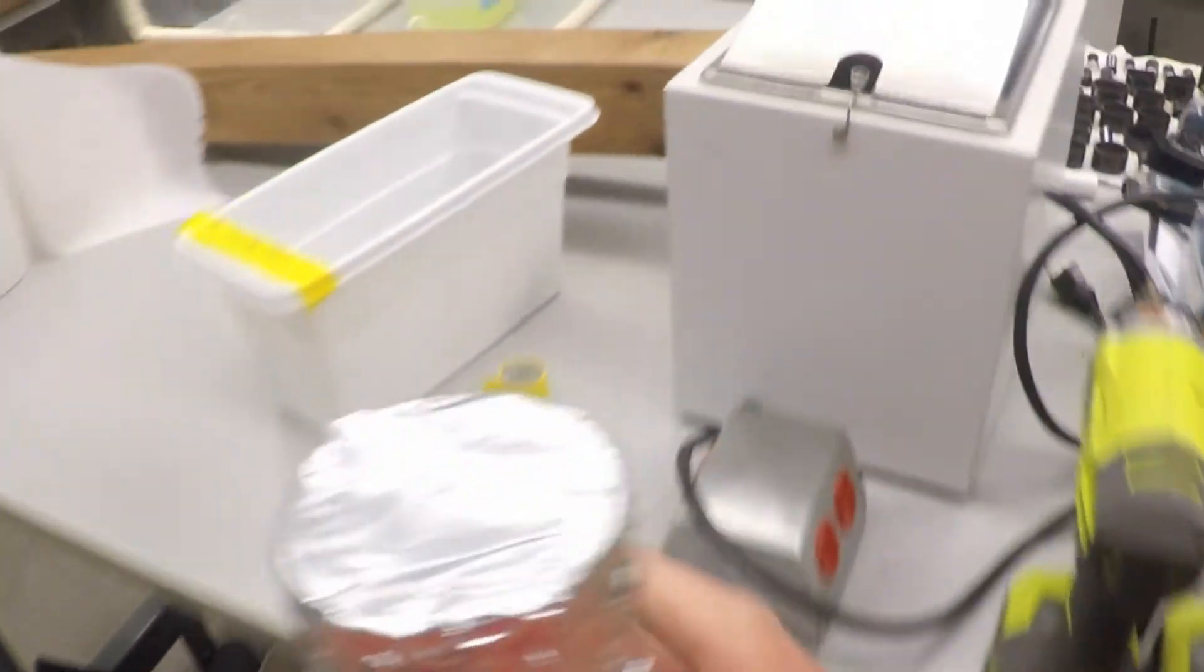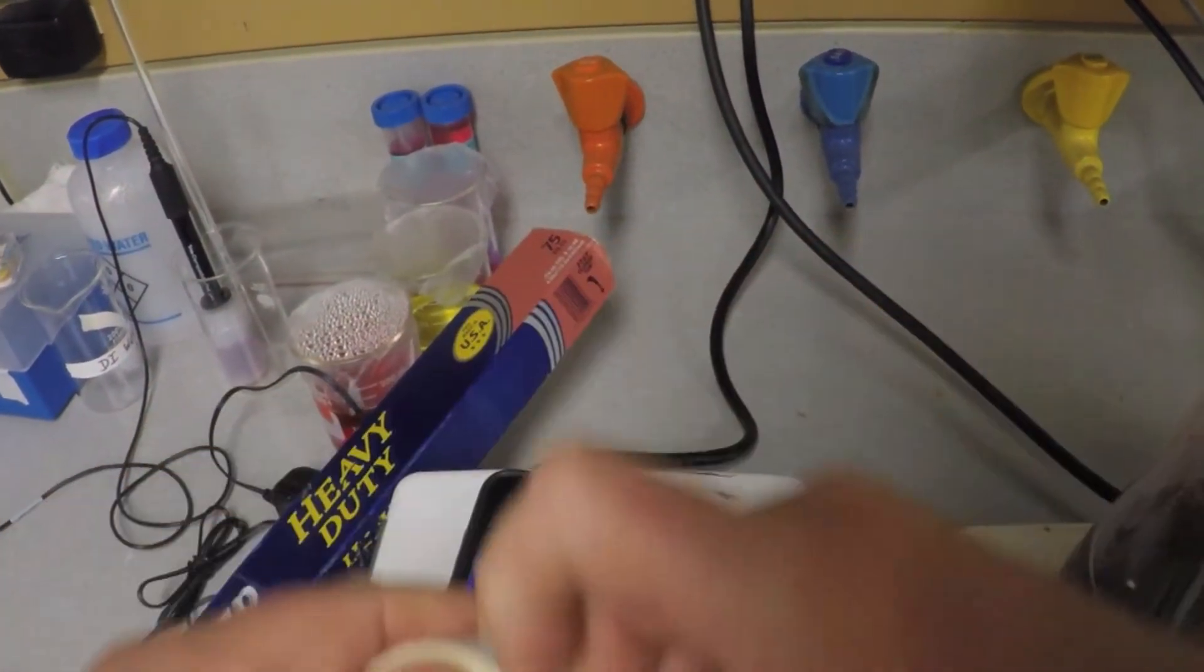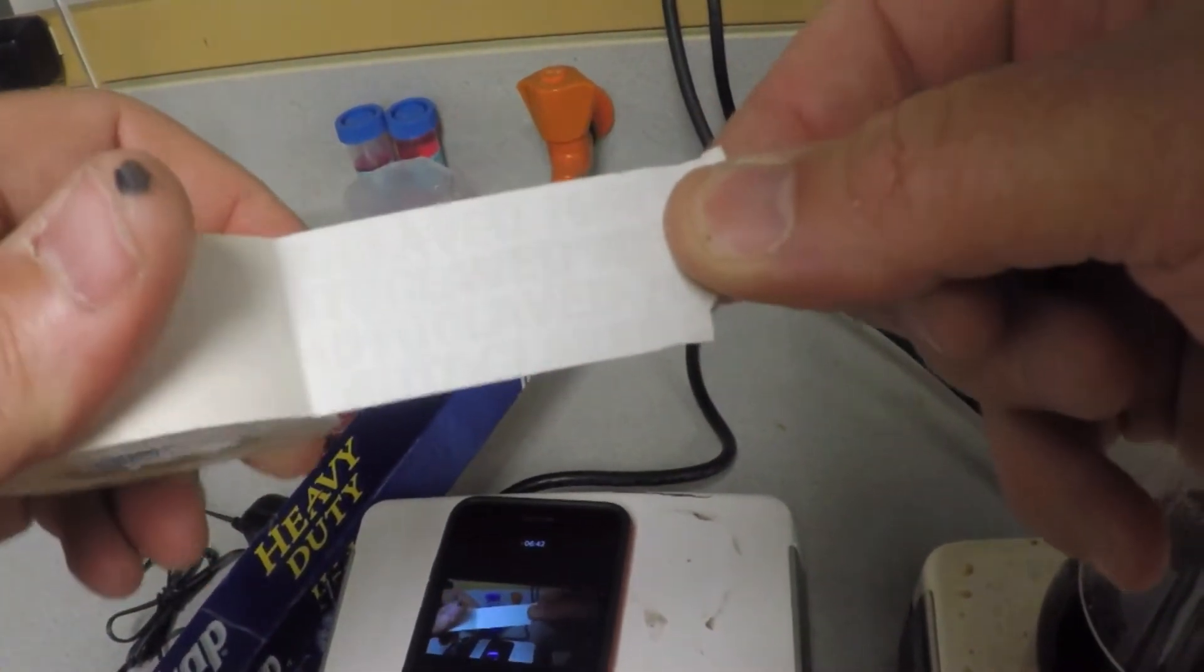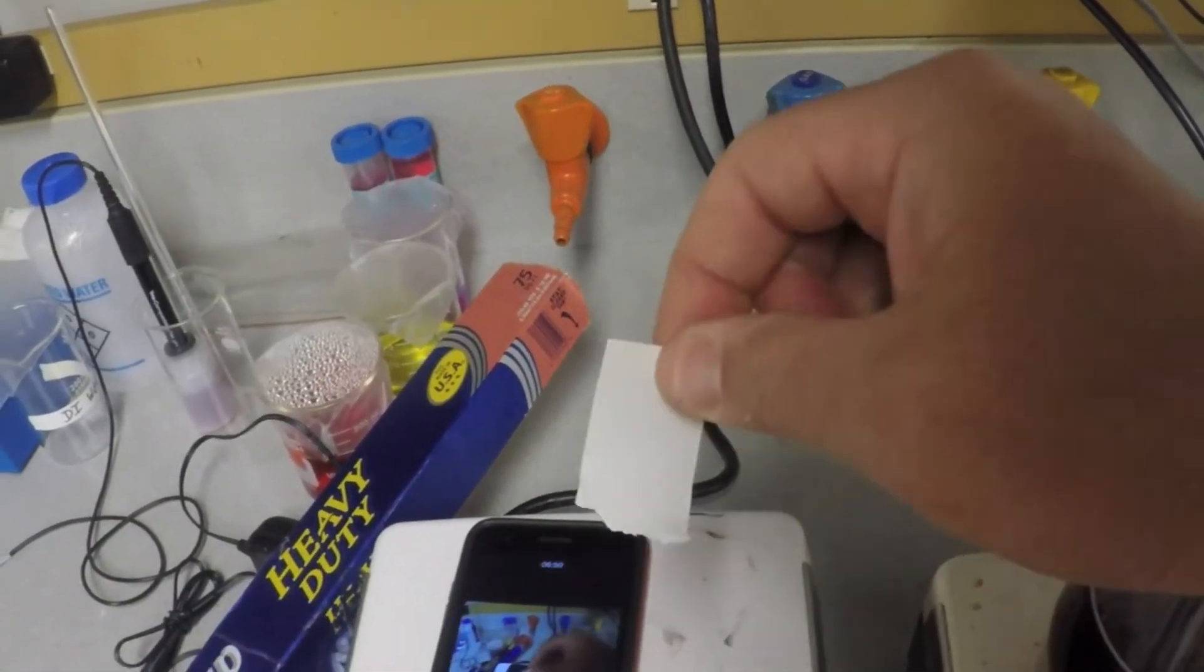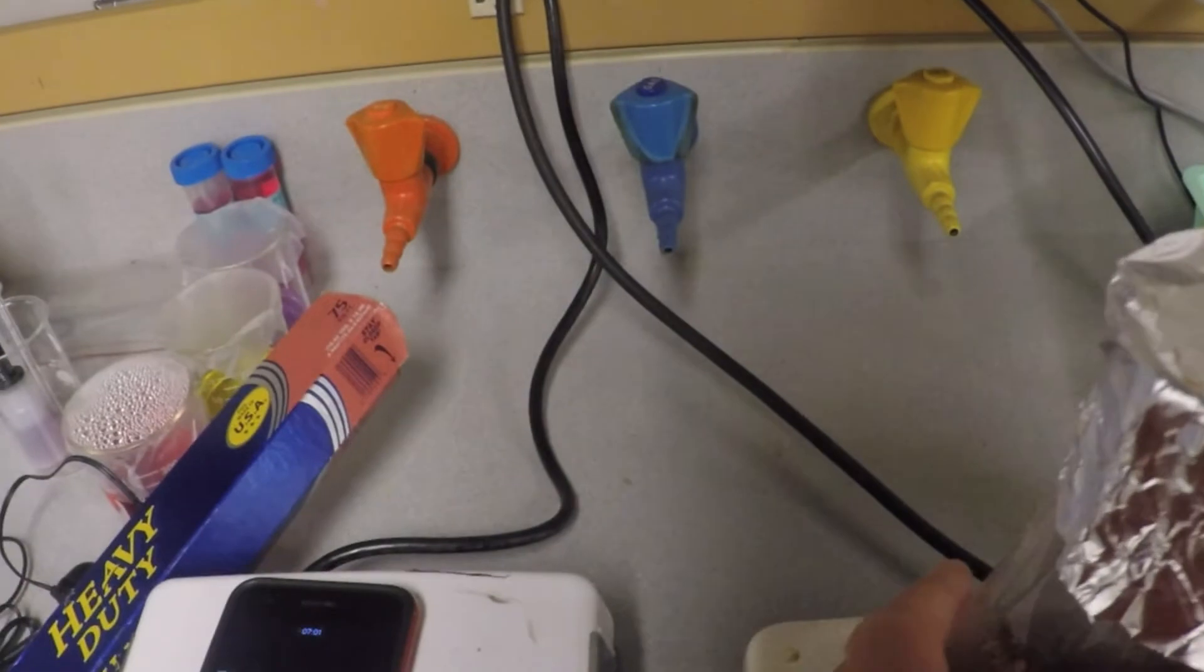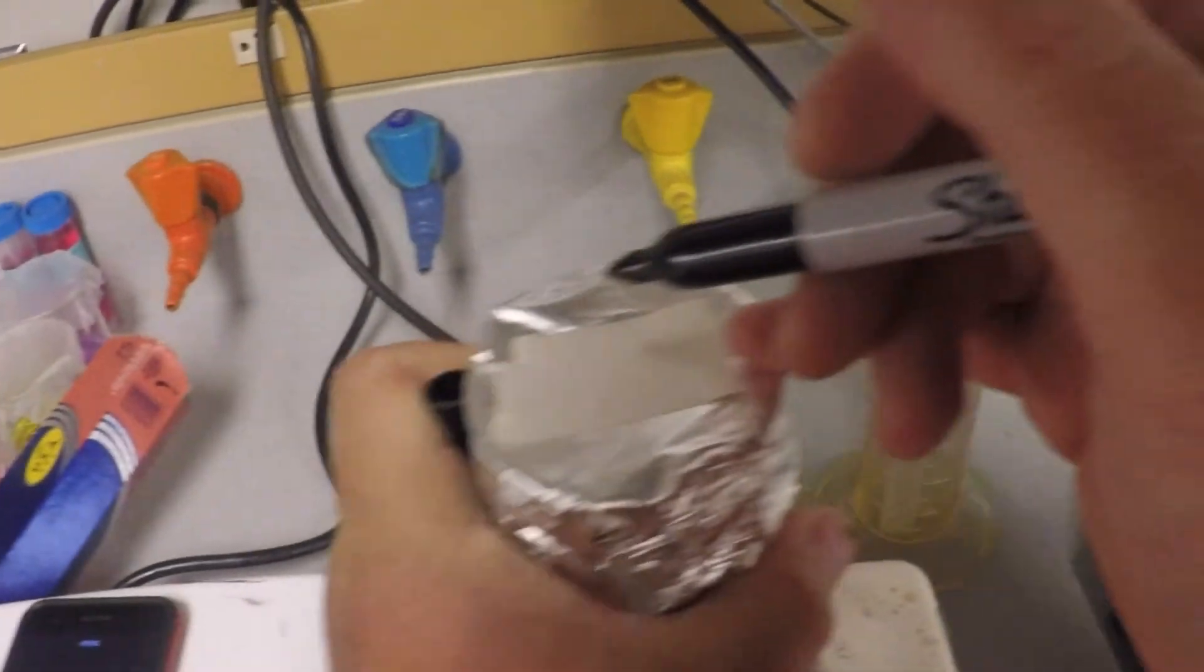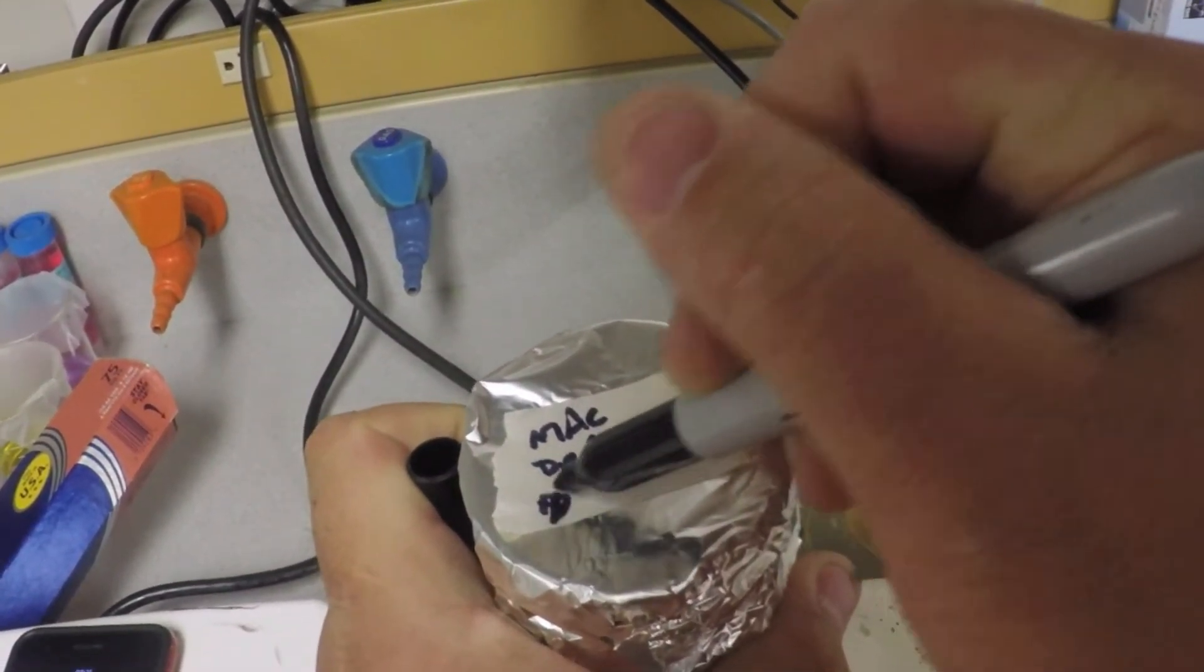So there is this stuff called autoclave tape. It's got writing on it—it even says autoclaved. What you do is take a little piece of it, bend over the edge so that you have a tab to grab later, and stick this someplace on the flask. I tend to put it either on the tippy top like this or on the edge. Then I'm going to label that with McConkey's agar, my name, the date: 8-12.